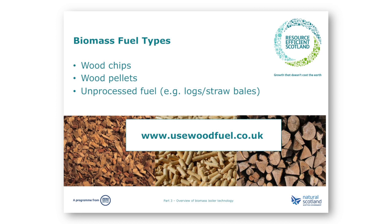Each boiler will be tested and a certificate produced which sets out what type of fuel it can burn in order for UK air quality standards to be met. The RHI scheme will require you to use a fuel which meets the specification for your boiler set out in the emissions certificate. For instance, it is typical for a log boiler to need a fuel of below 20% moisture content to meet air quality requirements. Forestry Commission Scotland have created a website dedicated to providing information on the use of wood fuel at www.usewoodfuel.co.uk.